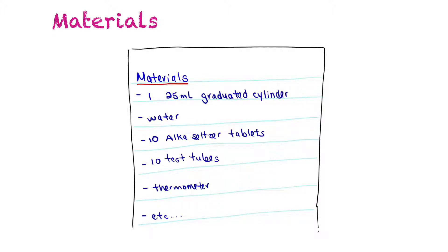The next thing to include in your lab report is a list of all the materials you used. You want to put them into a nice list form so that somebody else reading your lab report could collect all the materials and repeat your experiment. We want our materials and procedure written so that somebody else could follow your instructions and get the same results.